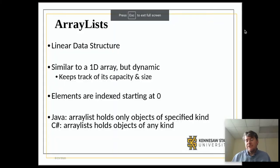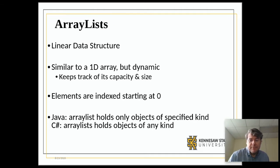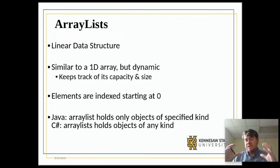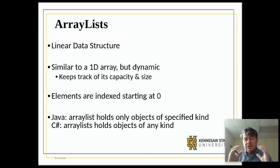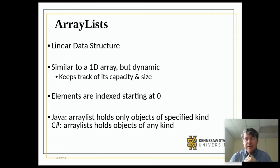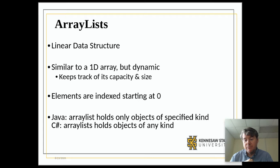An array list is very similar to an array in that it holds information in a single dimension. In an array you would typically start off and say this is an array of integers, there are 10 cells, and then you have 10 cells that you can put integers into or remove integers out of. The downside of an array, as we previously talked, is that arrays are limited to the size that you originally created.